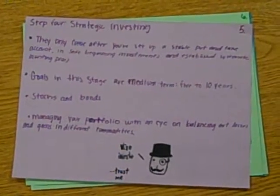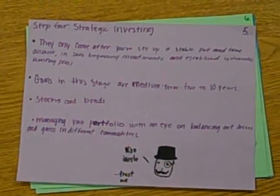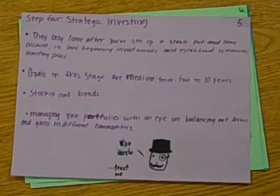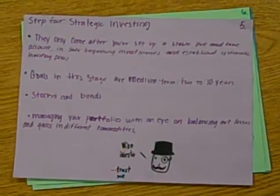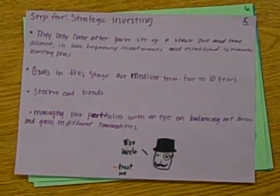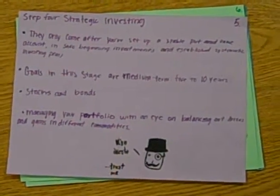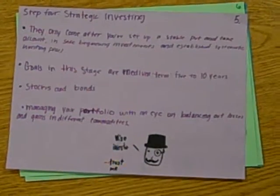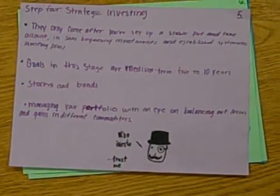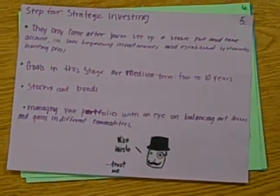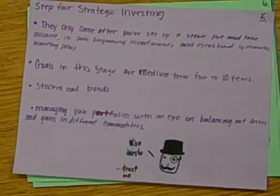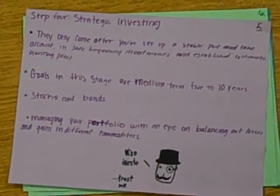Step 4: Strategic Investing. This only comes after you've put up a stable put and take account, safe beginning investments, and established systematic investing plans. Goals in this stage are medium term, 5 to 10 years — stocks and bonds mostly. Managing your portfolio with an eye on balancing out losses and gains in different commodities.